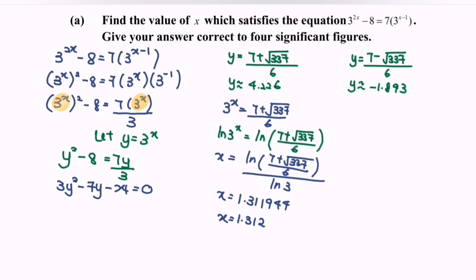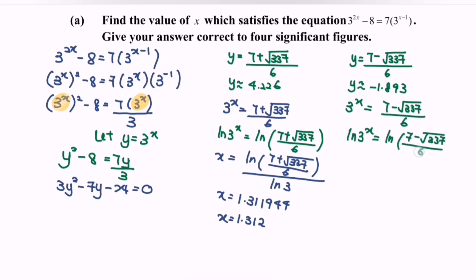Next, kindly focus on the right-hand side, where we have 3 to the power of x equal to 7 minus square root of 337 over 6. Taking ln of both sides, we have ln of 3 to the power of x equal to ln of bracket 7 minus square root of 337 over 6. As we know, 7 minus square root of 337 over 6 is a negative value — approximately negative 1.893. For the natural log function, the internal value must be greater than 0. Since the value is negative, which is less than 0, this situation is invalid.